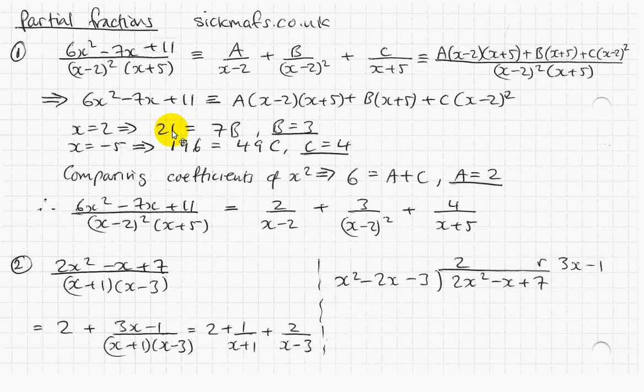So 21 equals 7b, therefore b must be 3. So I've got one letter so far. And I can do a similar trick again. Substitute x equals minus 5 this time. So I put minus 5 here, there, everywhere. What do I get? Well, wherever I've got x plus 5, that's going to disappear. So that's all going to disappear, that's all going to disappear. And I've got x which is minus 5, minus 5 minus 2 which is minus 7, squared is 49. So 49c is equal to 196 because I put minus 5 in all those two places and I've got 196. So 196 equals 49c, therefore c equals 4. Two letters done.